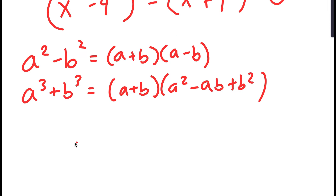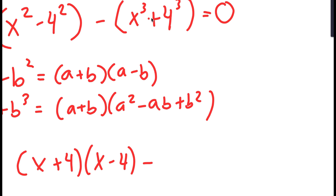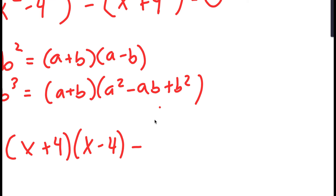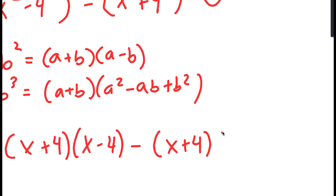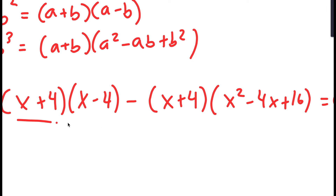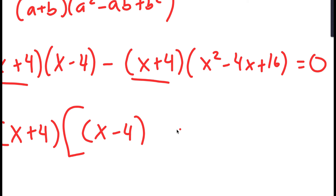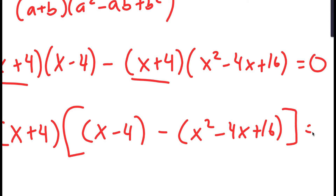I'm going to write this as x squared minus 4 squared, grouped with minus x to the power of 3 plus 4 to the power of 3 — the plus is because the negative sign distributes. So x squared minus 4 squared turns into x plus 4 times x minus 4, and minus x cubed plus 4 cubed turns into minus x plus 4 times x squared minus 4x plus 16. Because both terms have x plus 4, I can factor that out.